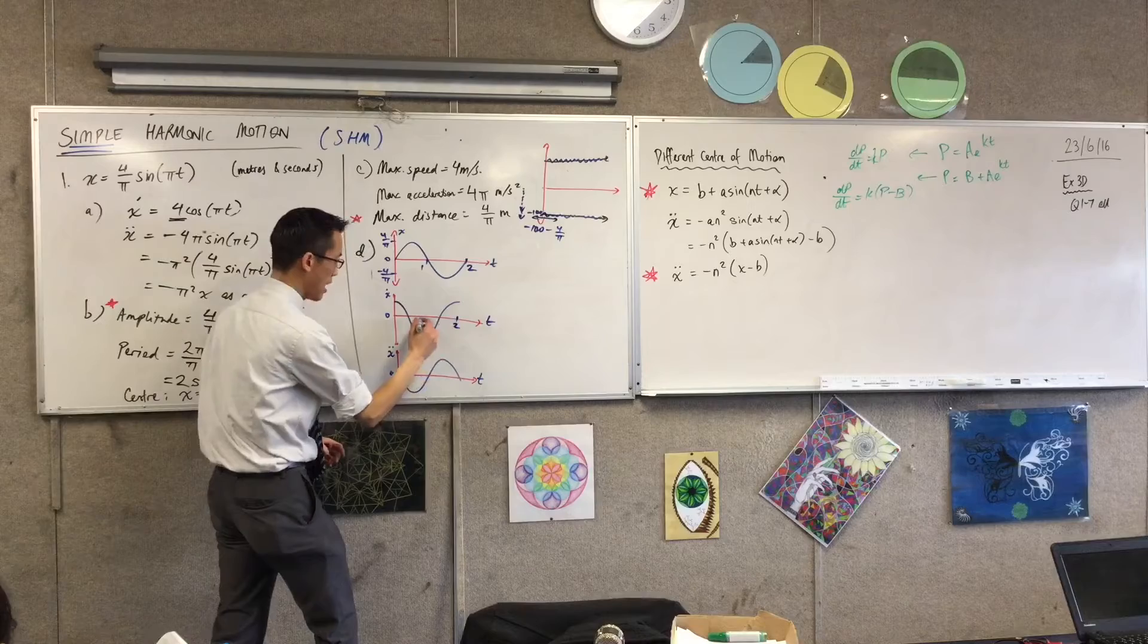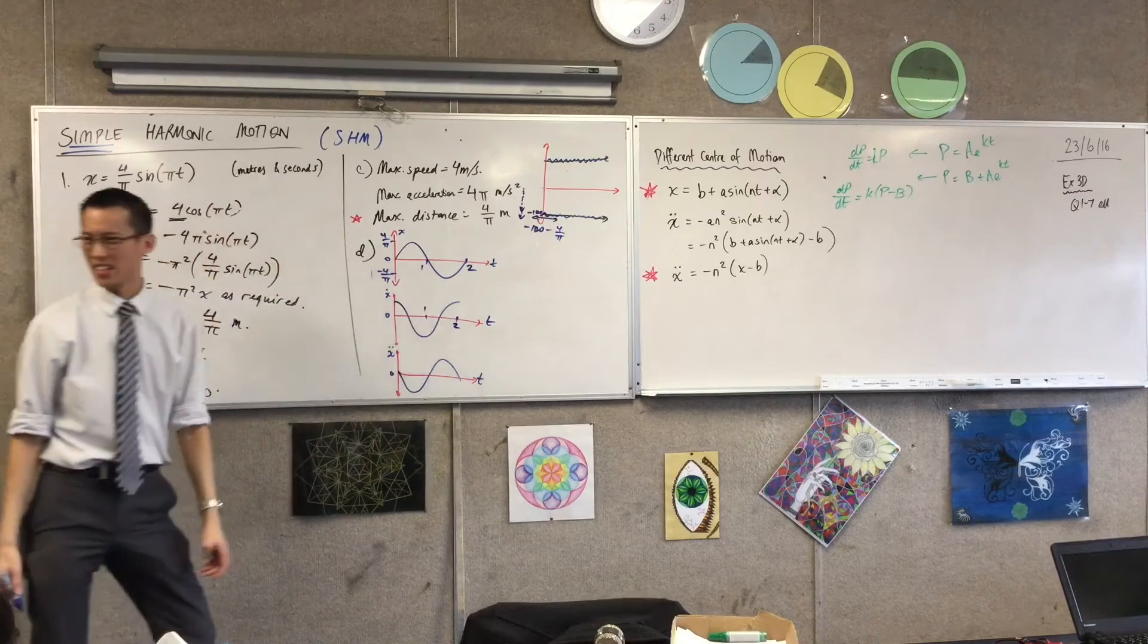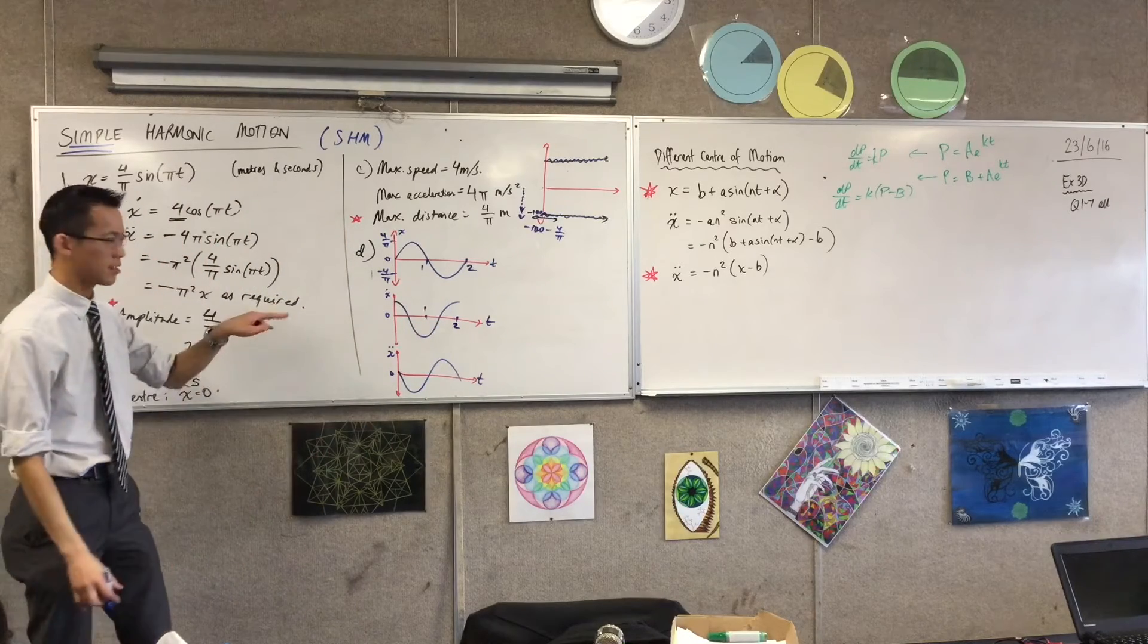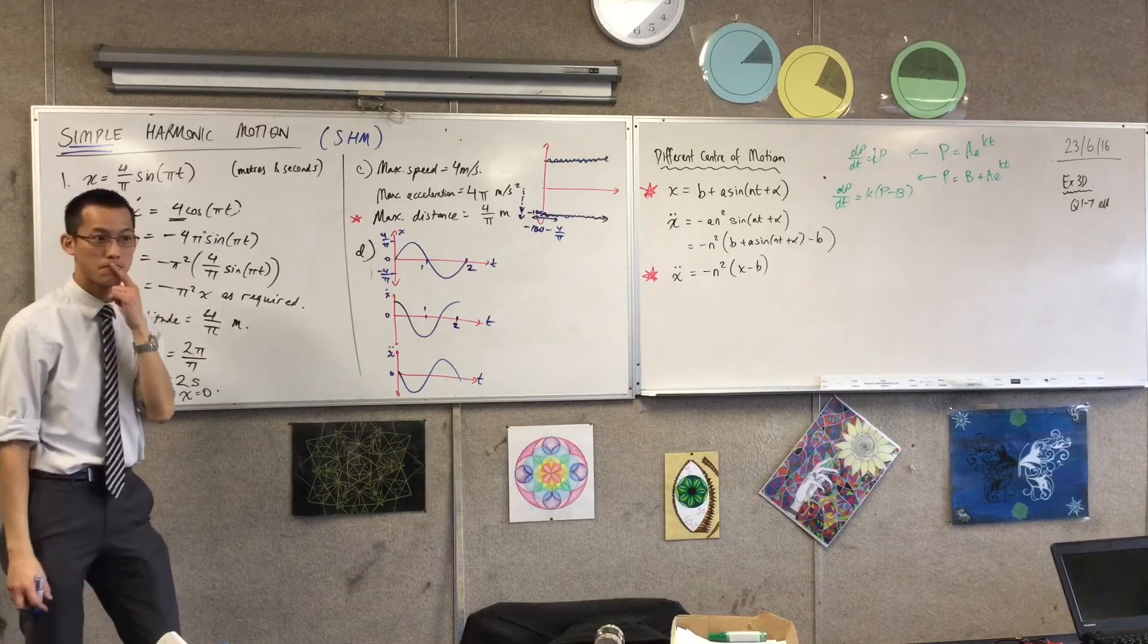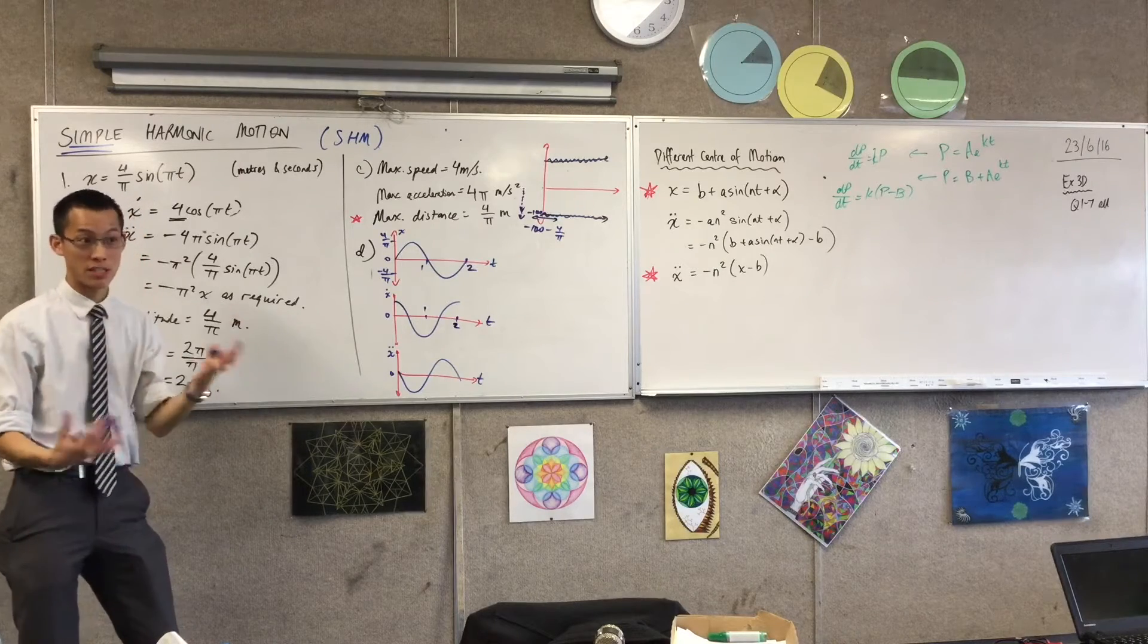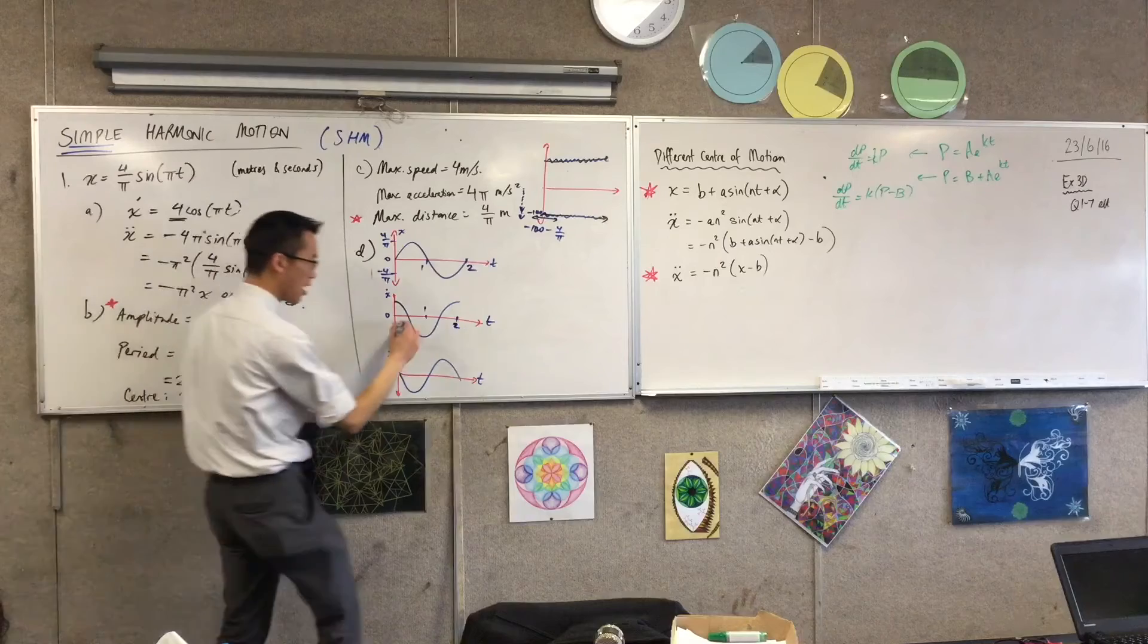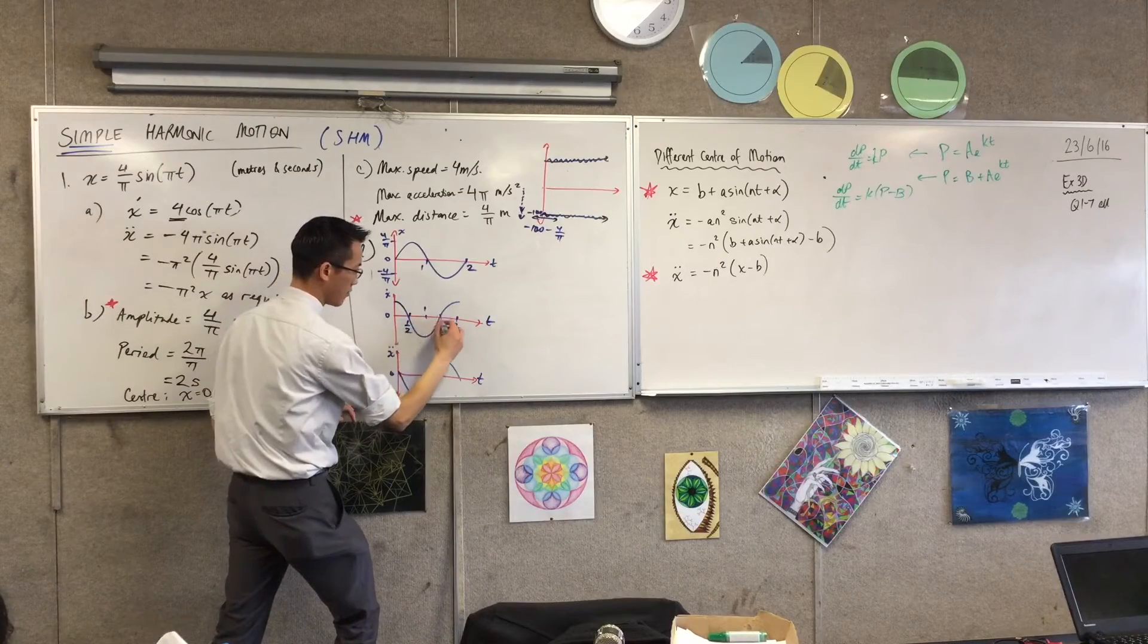So this is still two, and this is still one, but I have intercepts here that I better talk about. What are the intercepts? Can someone tell me the numbers? It's just a half and one and a half, right? Or three halves and two, that's fine.